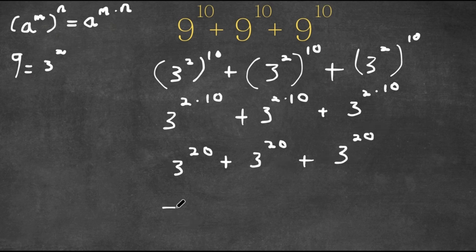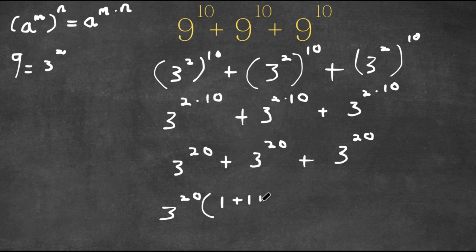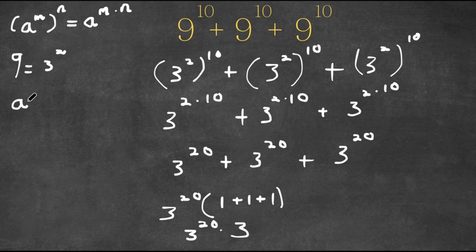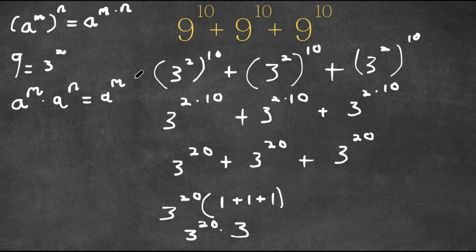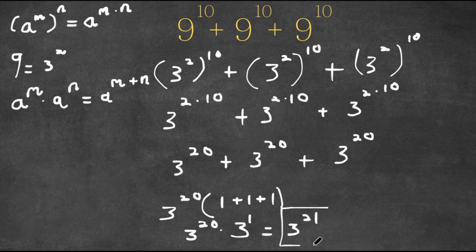Factoring out 3^20, we get 3^20 times (1 plus 1 plus 1), and 1 plus 1 plus 1 equals 3. So we have 3^20 times 3. Since a^m times a^n equals a^(m plus n), and 3 equals 3^1, this is 3^(20 plus 1) which equals 3^21. So our final answer is 3^21.